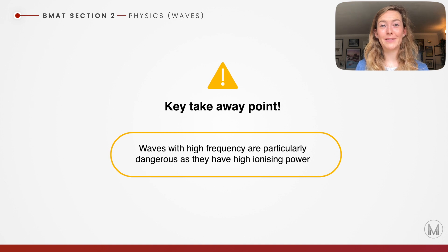There are hazards to the electromagnetic spectrum, particularly those waves that have the highest frequency and the shortest wavelength. This is because they have a high ionising power. They're able to damage our cells, for example.